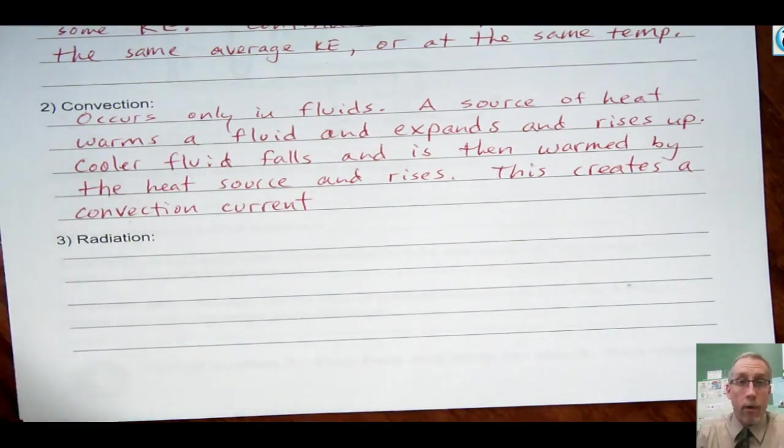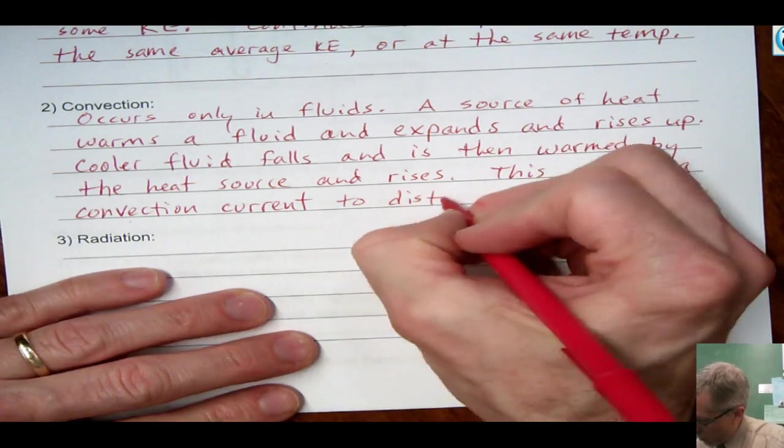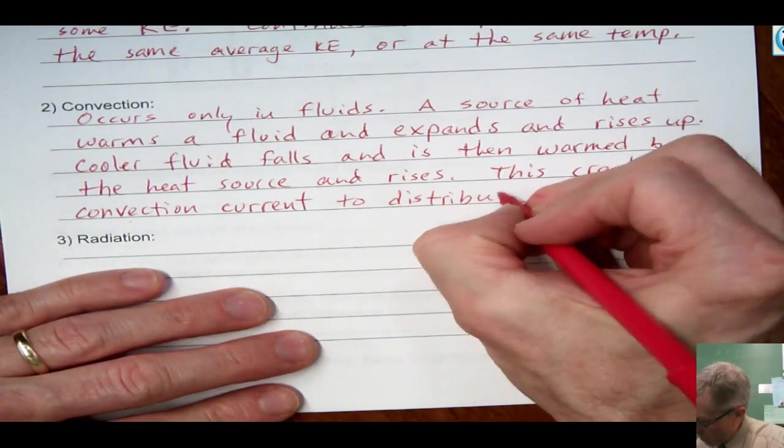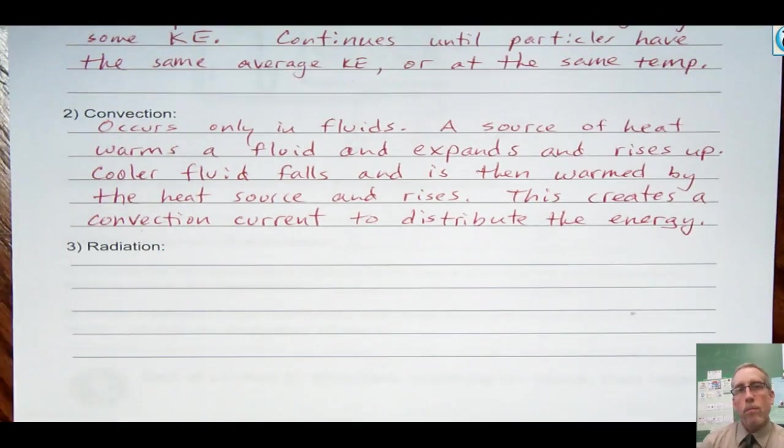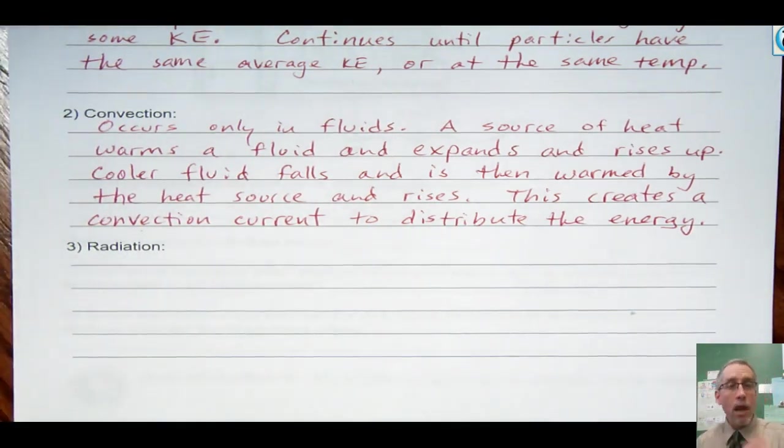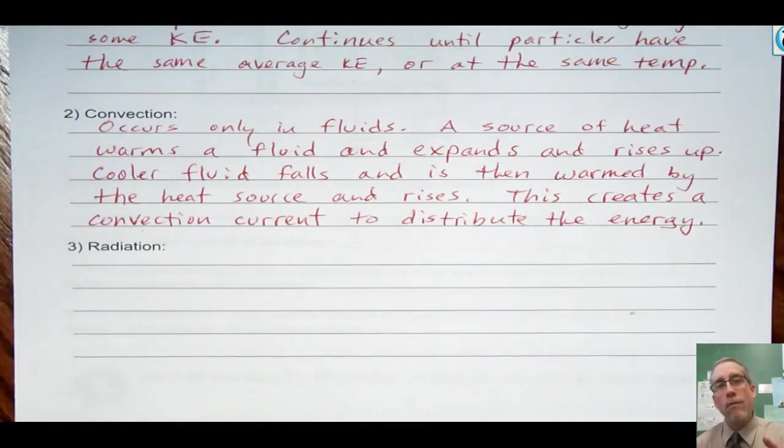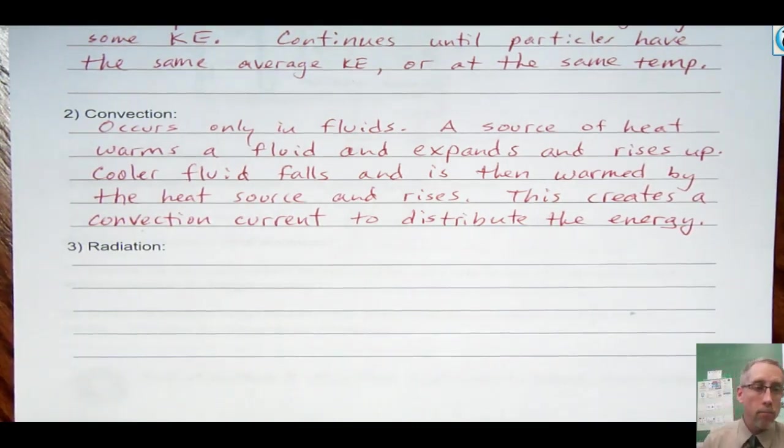So we'll say this creates a convection current, you know, current like the current in a river. Something that's flowing. So we're moving this energy. And the result is we just distribute the heat better. So the source of heat does not move. It does not come in contact with all of the other stuff that it warms up. We're actually using the fluid to move that energy around. Kind of mix it up so we more evenly distribute the heat. This happens a lot in your home. If you don't have the kind of heating system that blows the hot air, but maybe you have what's called a radiant system where you have a source of heat that stays put, we rely on that air to move the heat around.